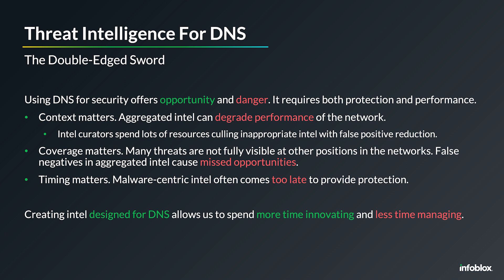If you take that threat intelligence — whether aggregated, curated, or created from one or many sources — and apply it to DNS, it actually ends up being a double-edged sword. On one side, I'm able to block threats prior to the compromise, completely independent of the operating system, device, or type of attack, because it's happening at the DNS layer, which is very early in the communication chain. On the other hand, it is early in the chain, so it is extremely easy to disrupt or degrade network performance by blocking a popular domain or one that you didn't know was important.